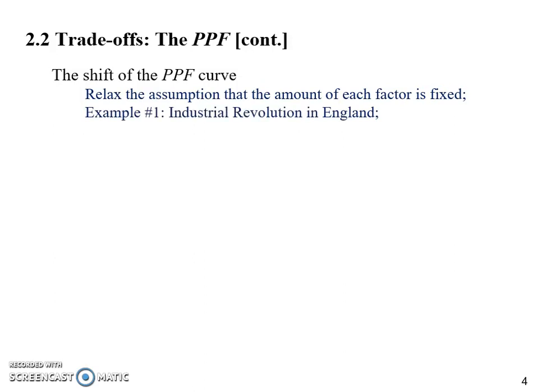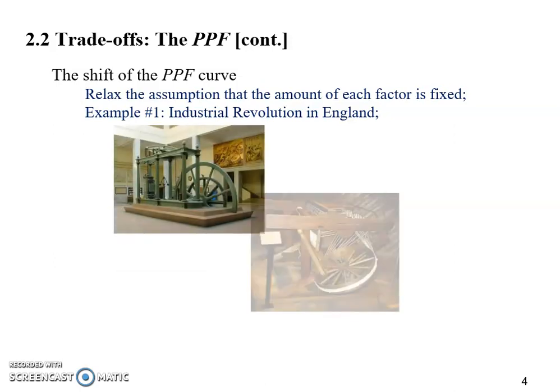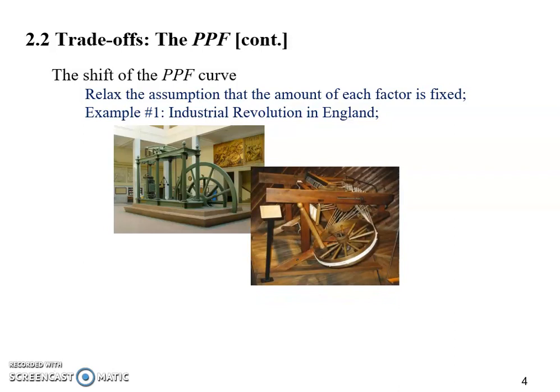The first example is the Industrial Revolution, which took place in England. During that Industrial Revolution, we find that many new equipment, new tools, and machineries were invented. Among them, these two are probably the most famous examples: the steam engine and the spinning jenny.